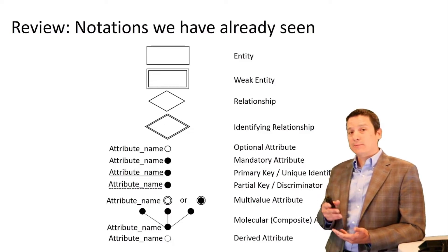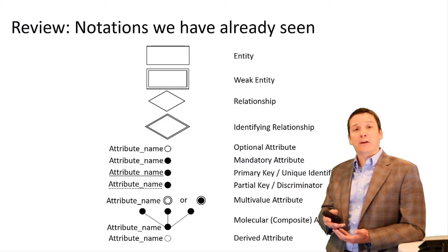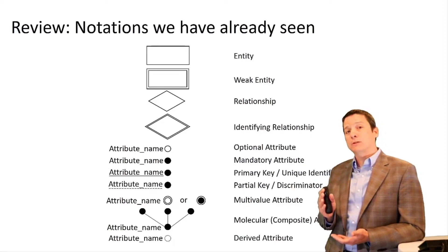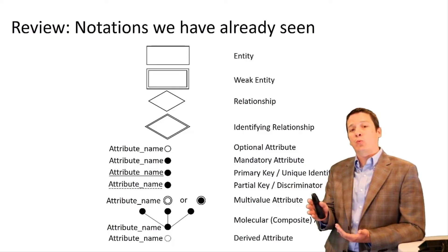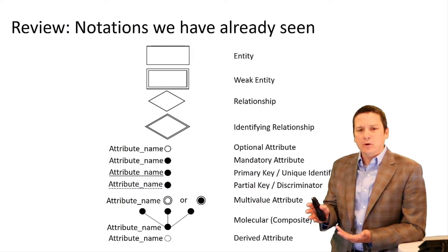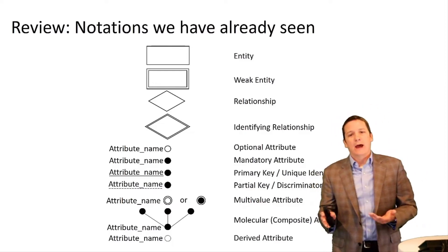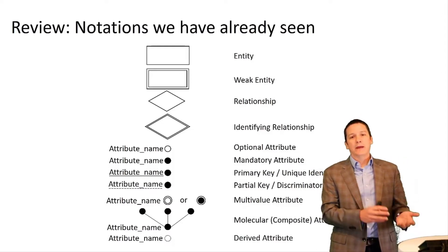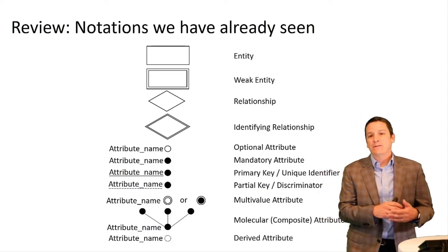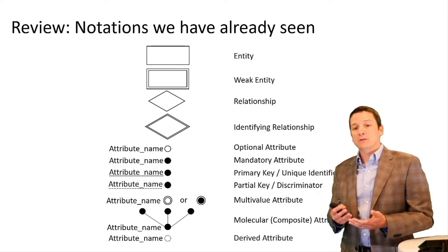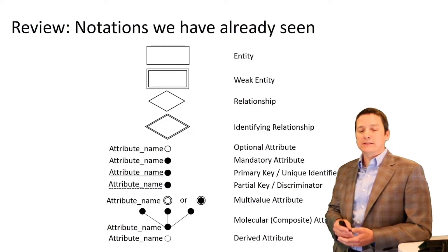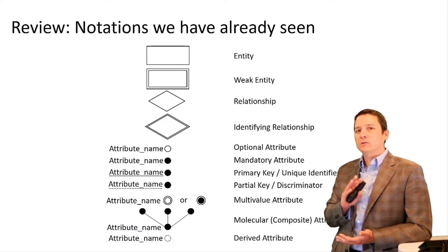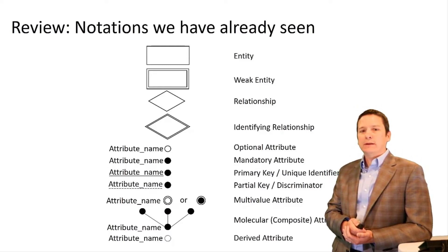Normal relationships are represented by a diamond with a single outline, while the identifying relationship — the special relationship between a base entity and a weak entity — uses a double diamond. Attributes can be optional, mandatory, unique identifiers or discriminators, partial keys, and so on. This is the grammar we've been using so far.